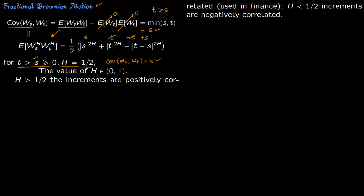So you always set the value of h between zero and one. So what if h is not equal to half? There are two cases. Say h is greater than half, then the increments, so the Brownian motion is all about increments. So the increments are dw.